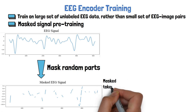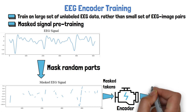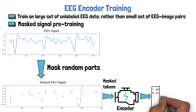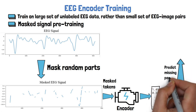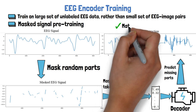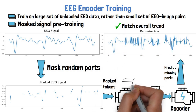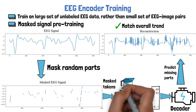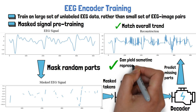The signal is converted to tokens, and the masked tokens are provided to the encoder we wish to train. The encoder yields embeddings, which are then fed to a decoder model, which uses the embeddings to predict the missing parts in the signal. We then get a reconstruction of the original signal — and as we can see, the reconstruction is not perfect, but it does pretty well to match the overall trend. When this pretraining process is completed, the trained encoder is able to generate semantic representations for EEG signals.